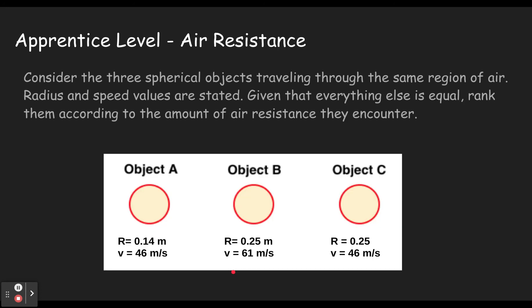The sample problems looks something like this. This is actually the only level I'm going to do a sample problem for, because the other ones, if I gave you the sample problem, it would be the question. So I'm going to give you everything you need to know, but you're going to have to do the problem yourself, which is always the goal to make sure you're learning physics. Consider three spherical objects traveling through the same region in air. Radius and speed values are stated. Given that everything else is equal, rank them according to the amount of air resistance they encounter.